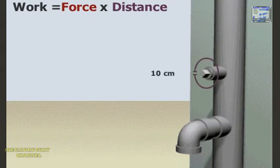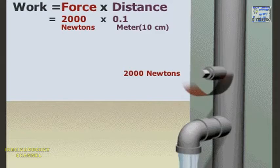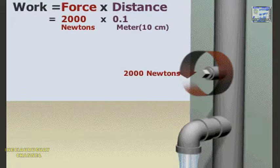Turning this axle a distance of 10 centimeters will open the valve and release water. Without a wheel, this axle will require a force of 2,000 newtons. Newtons are a way of measuring force. Applying this much force would be very difficult.